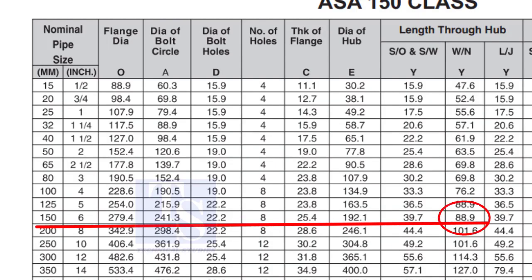Check the height of the flange in the table. Since the pressure rating is 150, the height of the flange is 88.9mm. Note down the height.